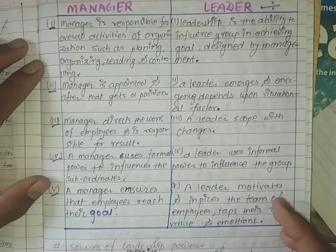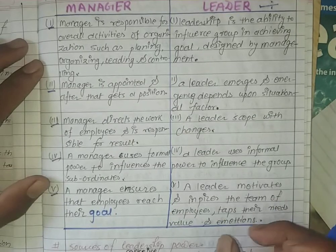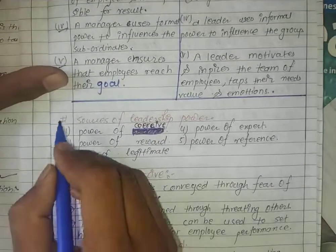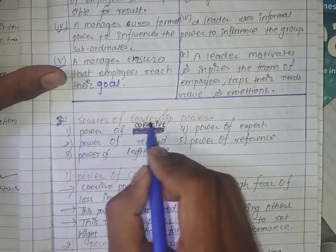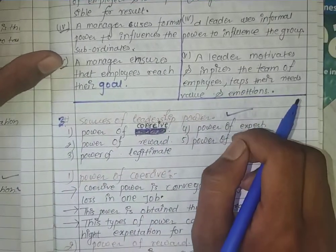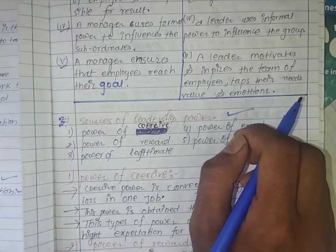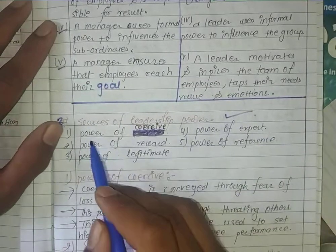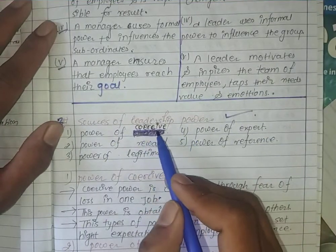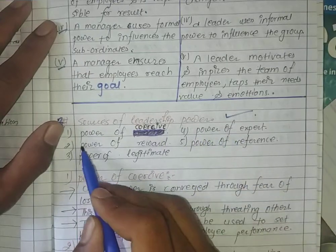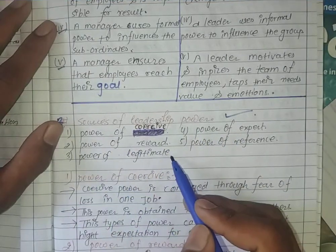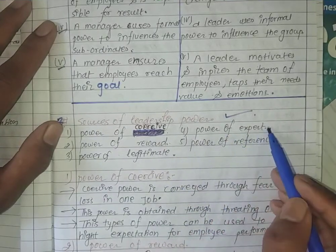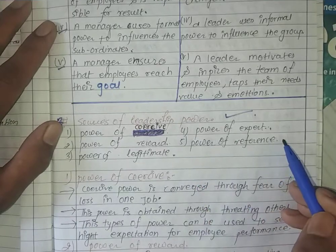There are five types of power: Power of Coercive, Power of Reward, Power of Legitimate, Power of Expert, and Power of Reference.